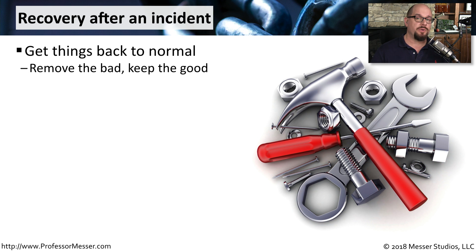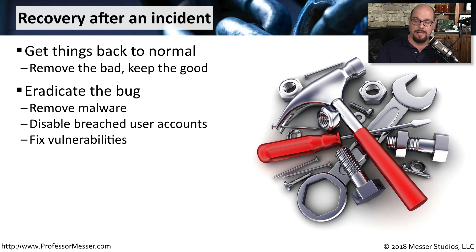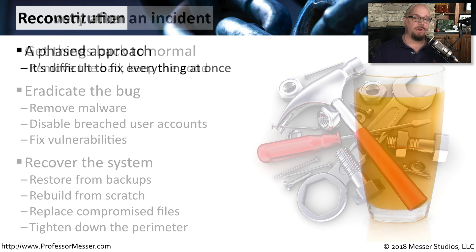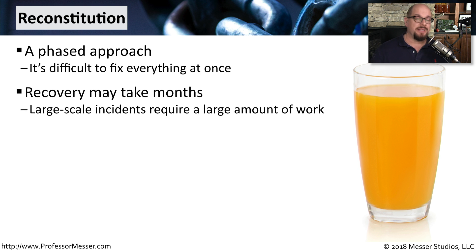After the incident is over, it's time to get back to normal. If malware has been installed, we need to eradicate it, disable any user accounts that may be involved, and fix any vulnerabilities on that system. If it's a complete system compromise, we might want to recover from known good backups, or it may be a case where we have to rebuild everything from scratch. The process of getting back to 100% normal may take some time, and it's common to have a phased approach. Sometimes it may take months to get back to normal, especially if this is a large-scale attack.